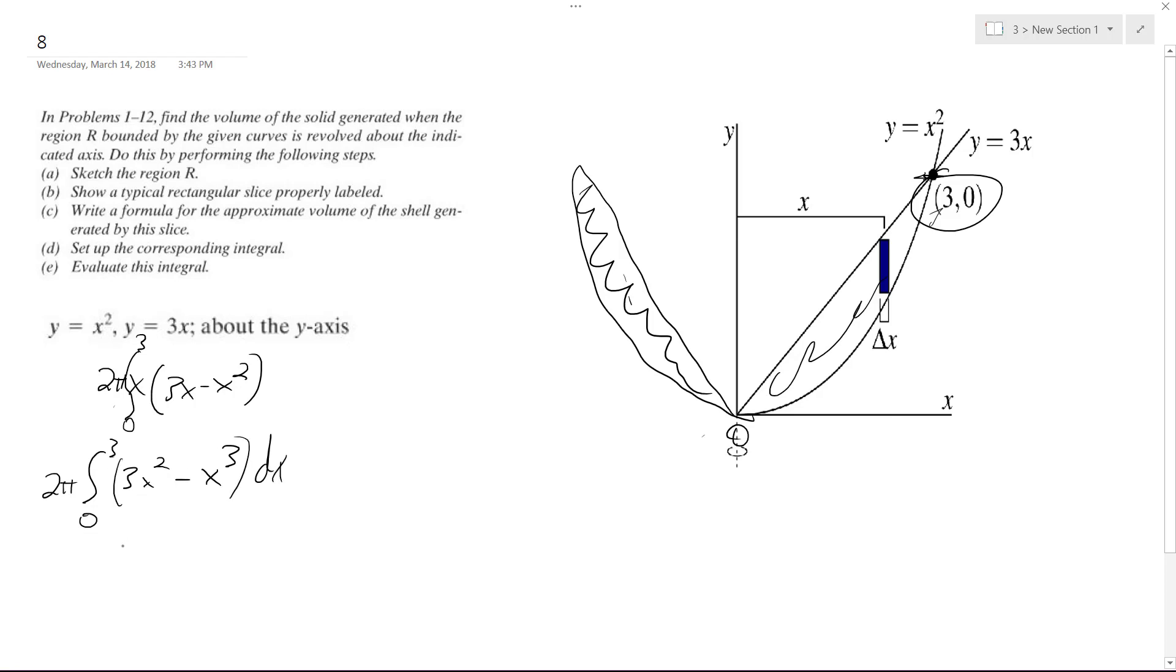So we integrate. We end up with 2π, and we get 3x cubed over 3. Actually, it just ends up being x cubed.